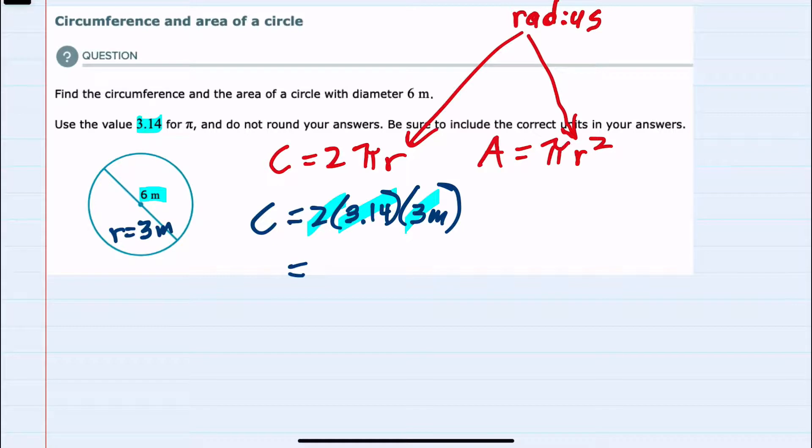Multiply that by 3. We have 18.84, and the units are just meters. They're not being multiplied with anything, so our circumference is 18.84 meters.